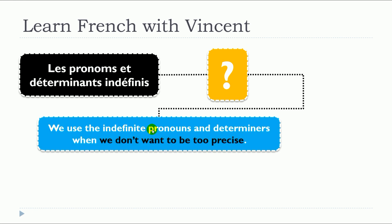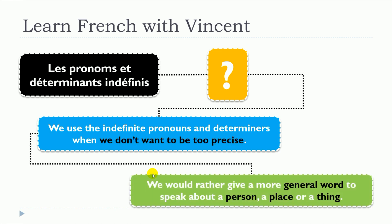We use the indefinite pronouns and determiners when we don't want to be too precise. These déterminants pronoms indéfinis are used when we don't want to be too precise. We would rather give a more general word to speak about a person, a place or a thing.